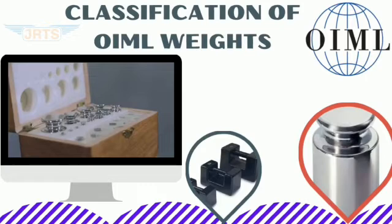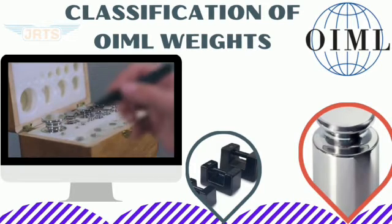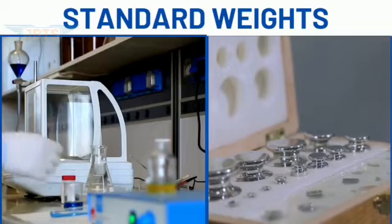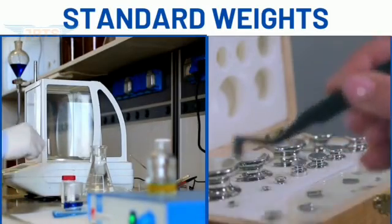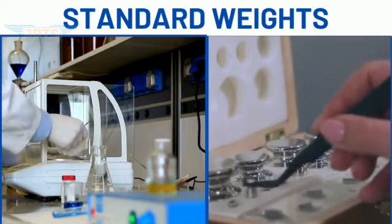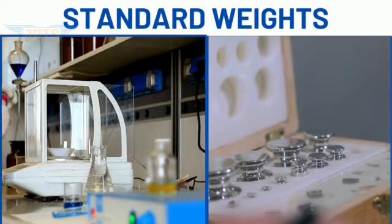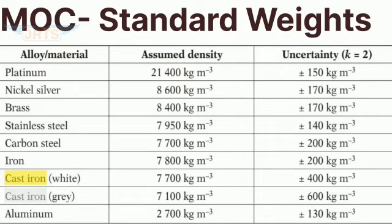In this video we are going to see the classification of OIML weights. Standard weights are used to verify the reading of a weighing balance. If the readings are out of accuracy, we need to calibrate the weighing balance by using proper standard weights. OIML weights are manufactured using different materials and alloys. In industry, the most commonly used materials are stainless steel, brass, and cast iron.